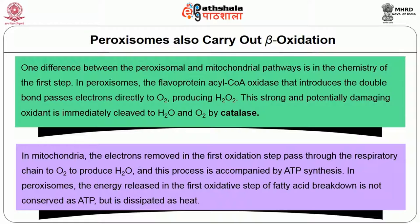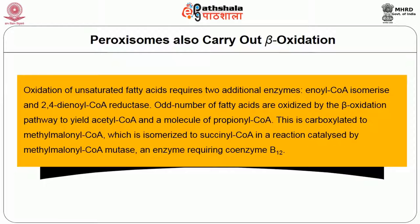In peroxisomes, the energy released in the first oxidative step of fatty acid breakdown is not conserved as ATP but is dissipated as heat. Oxidation of unsaturated fatty acids requires two additional enzymes: enoyl-CoA isomerase and 2,4-dienyl-CoA reductase. Odd-numbered fatty acids are oxidized by the beta oxidation pathway to yield acetyl-CoA and a molecule of propionyl-CoA. This is carboxylated to methylmalonyl-CoA, which is isomerized to succinyl-CoA in a reaction catalyzed by methylmalonyl-CoA mutase, an enzyme requiring coenzyme B12.